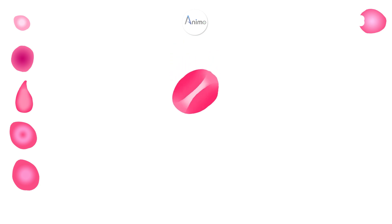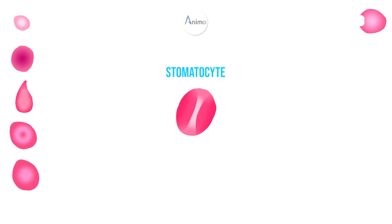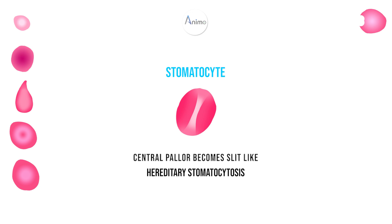The next RBC is stomatocyte, because it looks like the stomata of a plant. In this RBC, the central pallor becomes slit-like. So it is found in hereditary stomatocytosis.